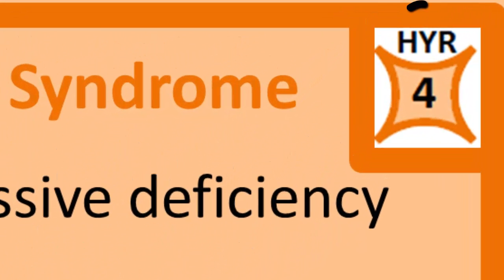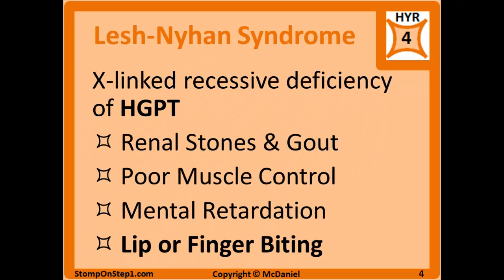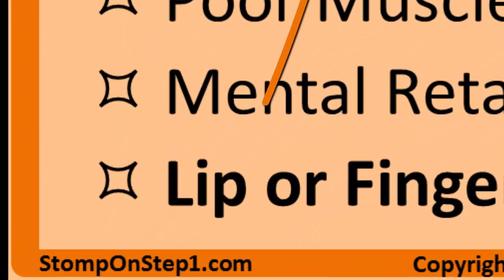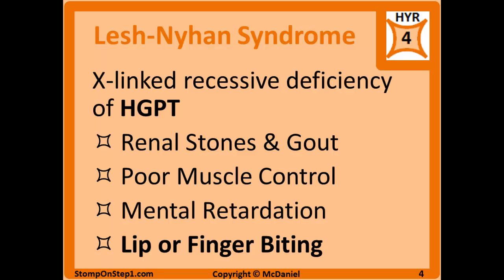Lesch-Nyhan syndrome is given a high yield rating of 4 on a scale from 0 to 10, giving you a rough estimate for how important each topic is for the Step 1 exam. Lesch-Nyhan is a deficiency of the enzyme responsible for the recycling of purines, and that deficiency is inherited through an X-linked recessive fashion. It would be intuitive that you're going to get renal stones and gout, since we already discussed how excess uric acid from excessive purine breakdown causes those. You're also going to have poor muscle control or spasticity, mild forms of mental retardation, and the red flag I use in any question for Lesch-Nyhan is lip and finger biting, which are forms of self-mutilation that are pretty unique to Lesch-Nyhan.